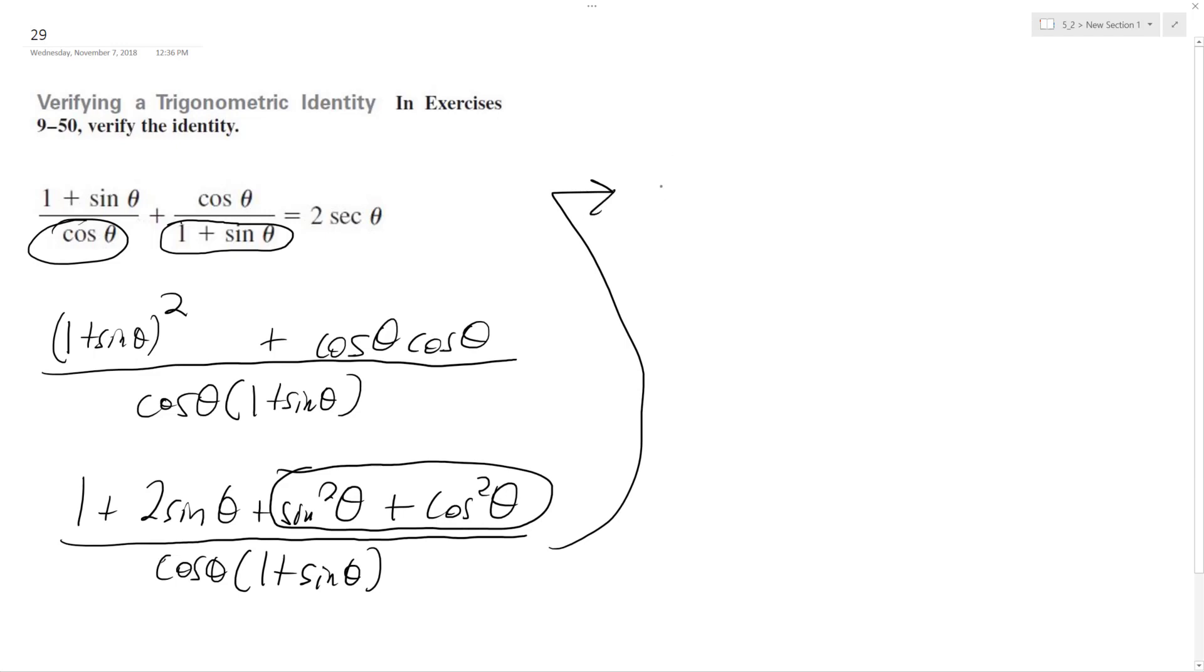So this becomes 1, which I can add to the other 1. I get (2 plus 2 sine theta) over (cosine theta times (1 plus sine theta)). I can factor out a 2 here, so I get 2 times (1 plus sine theta) over (cosine theta times (1 plus sine theta)). That looks nice.